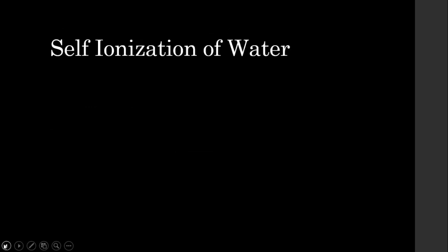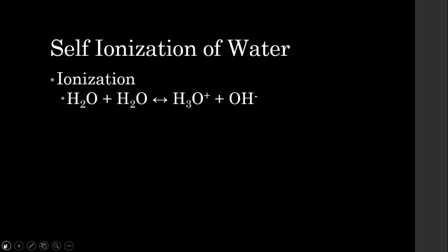We've seen how acids and bases ionize in water, but did you know that water itself also ionizes? When water ionizes, you can see that water produces the hydronium ion and the hydroxide ion. Remember we talked about, with Bronsted's idea, that water is amphoteric — it can act as both an acid or a base. We can see how in this equation water can act as an acid by producing the hydronium, or it can act as a base by producing hydroxide.